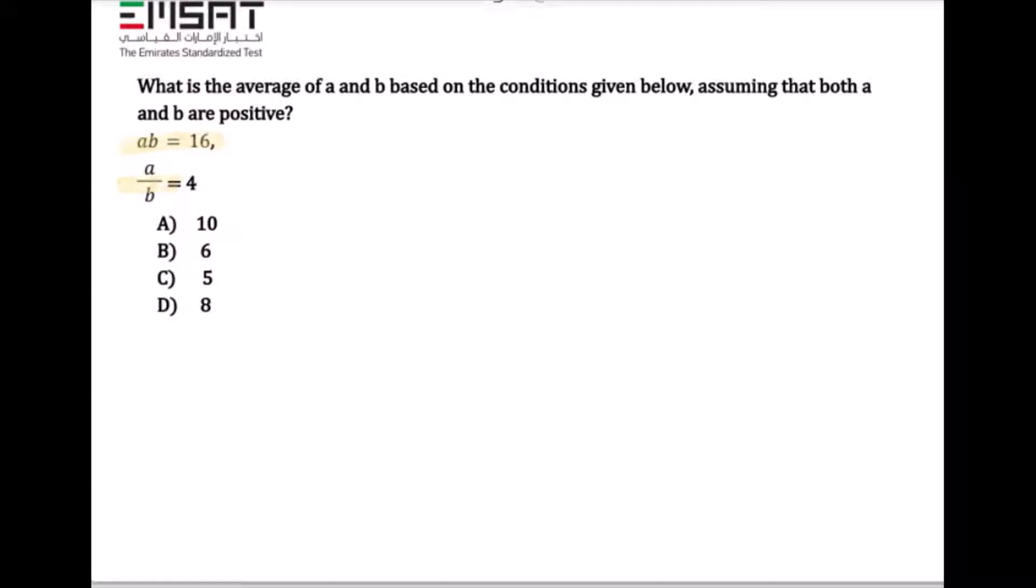What is the average of a and b based on the conditions given below, assuming that both a and b are positive? The given conditions are: ab equals 16, and a over b equals 4.